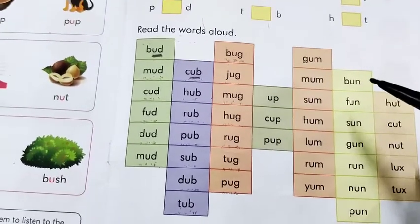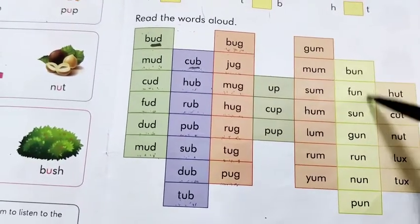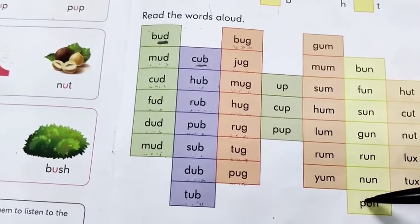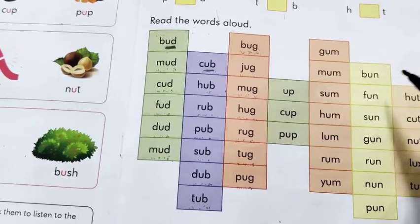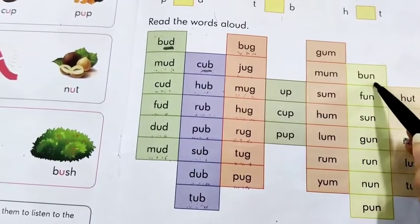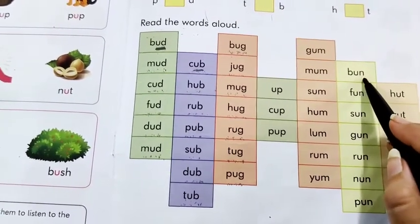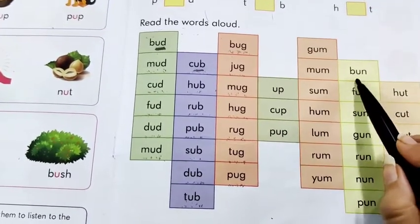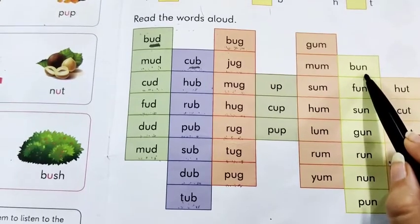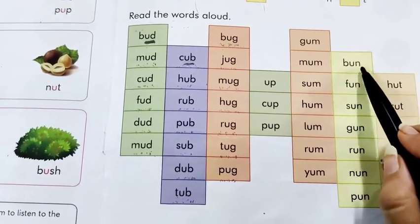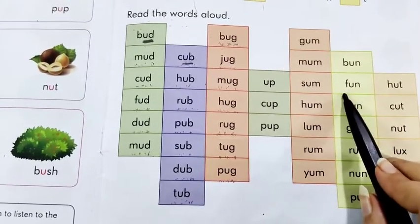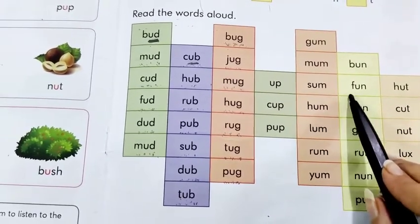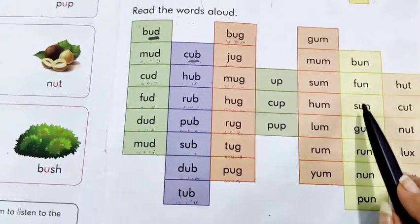Then, now we have some three letter words in this yellow line. Here we have some three letter words made by the use of U. N-U-N, the Un two letter word family. B-U-N, Bun. F-U-N, Fun.